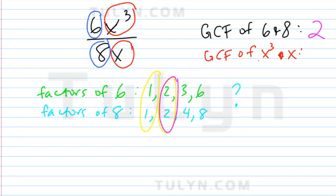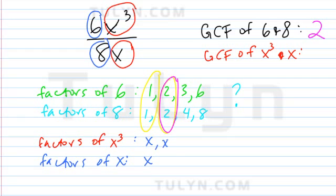And the greatest common factor of x to the third and factors of x are x and x. So what I'm going to do is I'm just going to end up choosing x anyway. So x here.